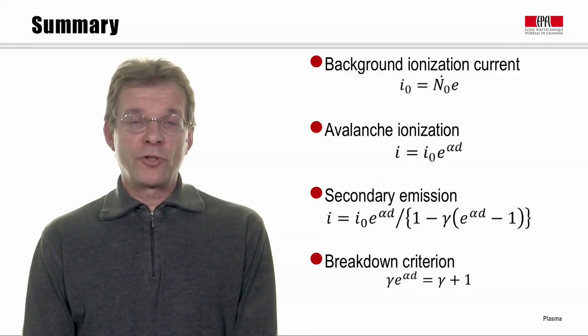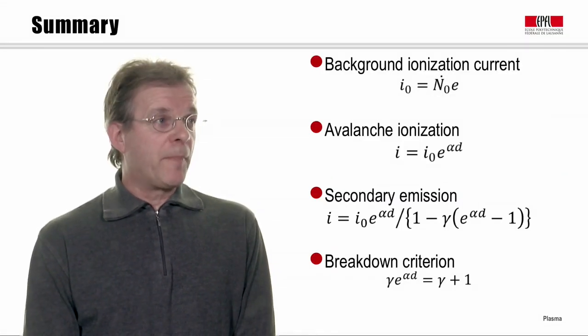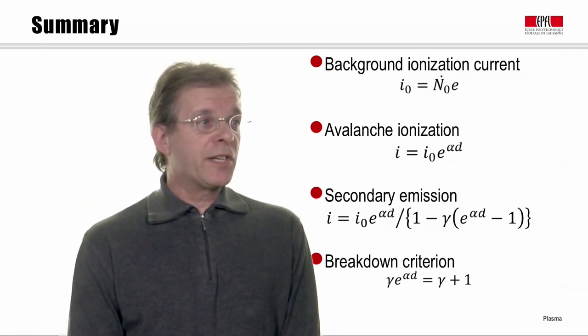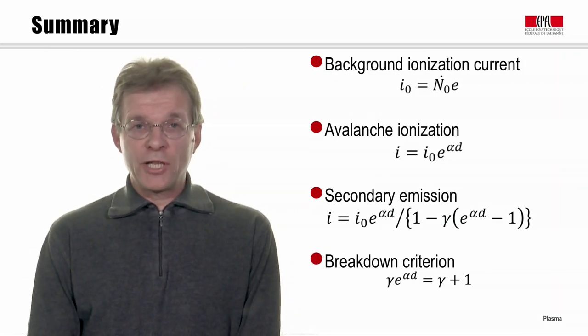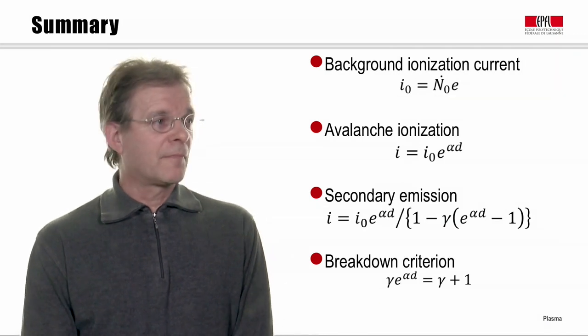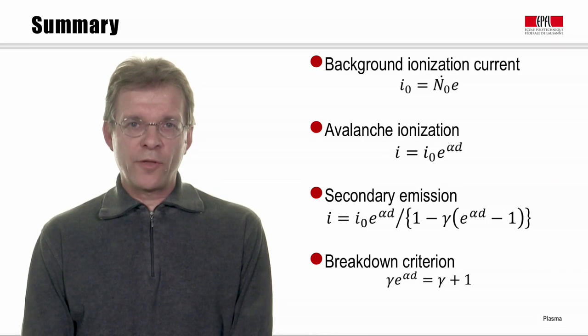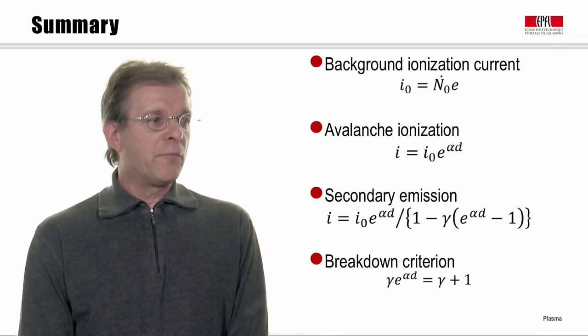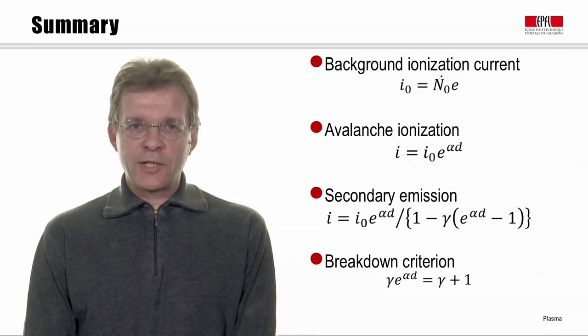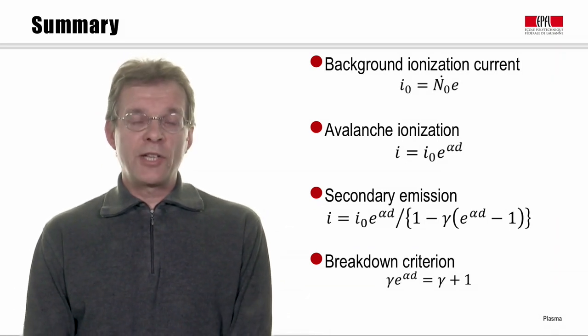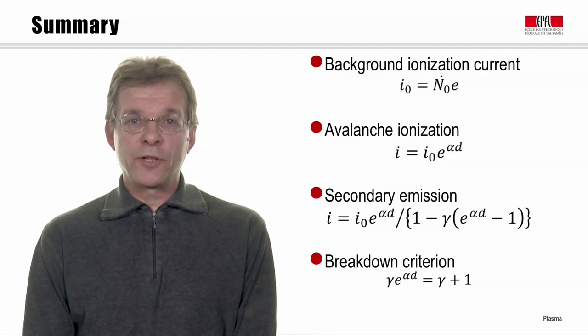So, to summarize this module, we've considered the background ionization current, we've seen how ionization leads to an avalanche which increases the current, we've seen that secondary emission increases the current still further, and then we arrive at a point where we have breakdown, where the breakdown criterion is given by gamma e to the alpha d equals gamma plus 1.